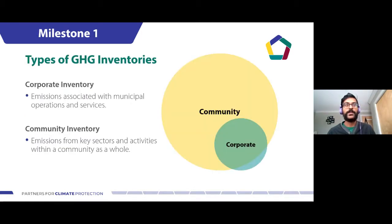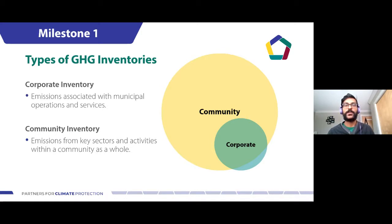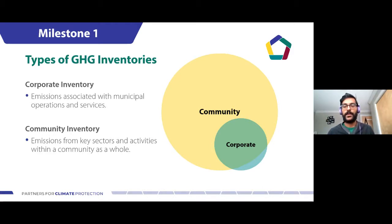When we think about inventories, it's really good practice to have boundaries — they allow for specific information to be tracked and analyzed. For municipalities, there are generally two accepted types of inventories: a corporate inventory and a community inventory. The corporate inventory outlines emissions generated directly from municipal operations and building services — things the community has direct control over. The community inventory is an estimation of emissions generated within the boundary of a municipality, with less direct control over sources. Typically, most corporate emissions fall underneath a community inventory, with a couple of exceptions.